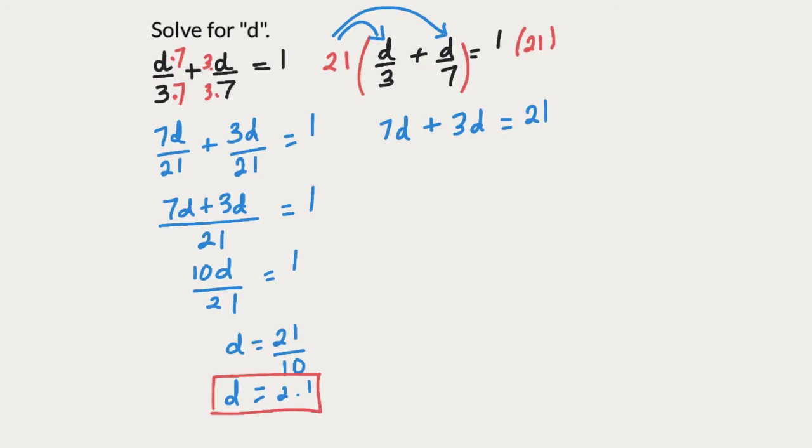We see that 7d plus 3d is 10d equals 21. And 10 is being multiplied, we take it to the other side and it divides 21 which again gives us d equals 2.1. We get the same answer as we got using the previous method.